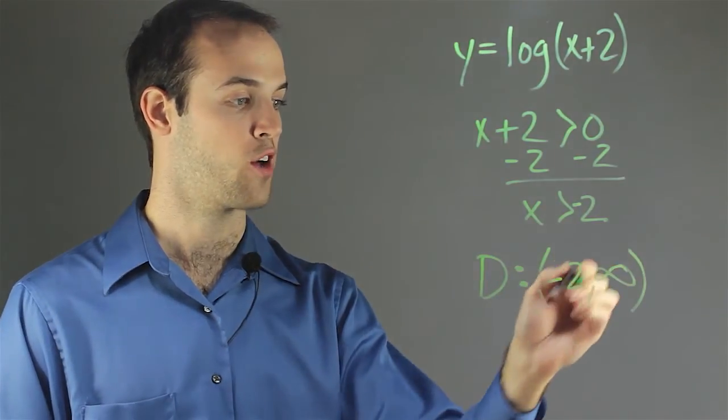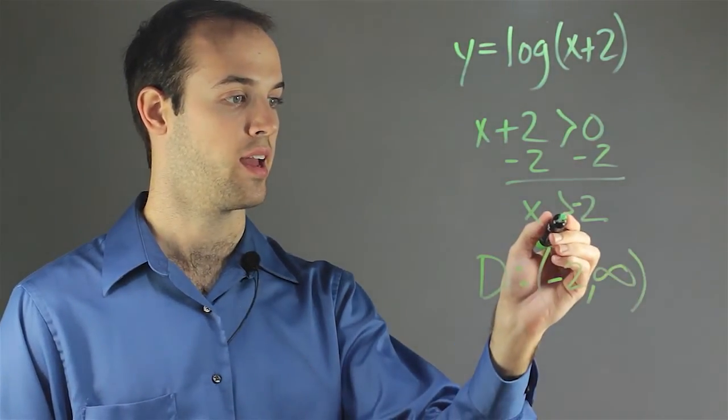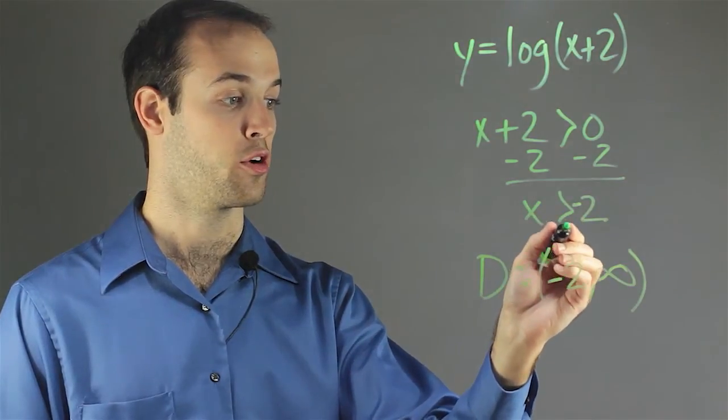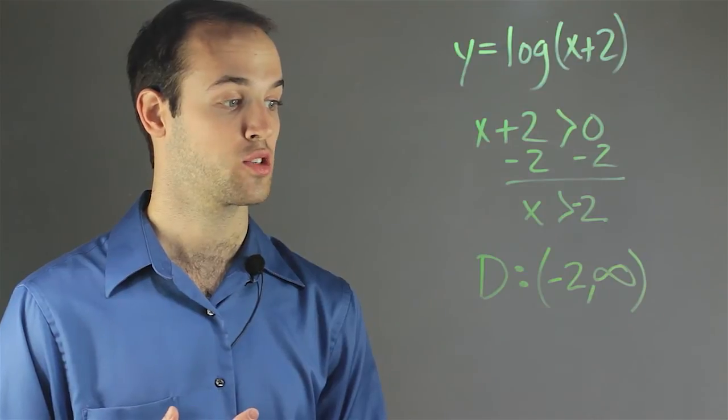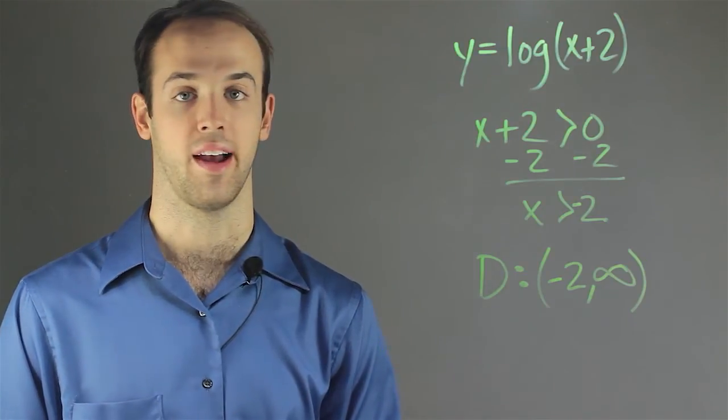And again, we want to use soft brackets on both of those because we have a greater than sign, not a greater than or equal to sign, and infinity always gets a soft bracket. So the x values for this graph must always be between negative 2 and infinity.